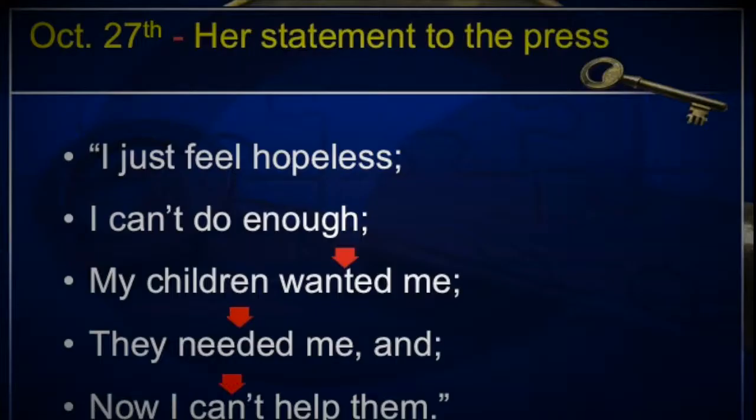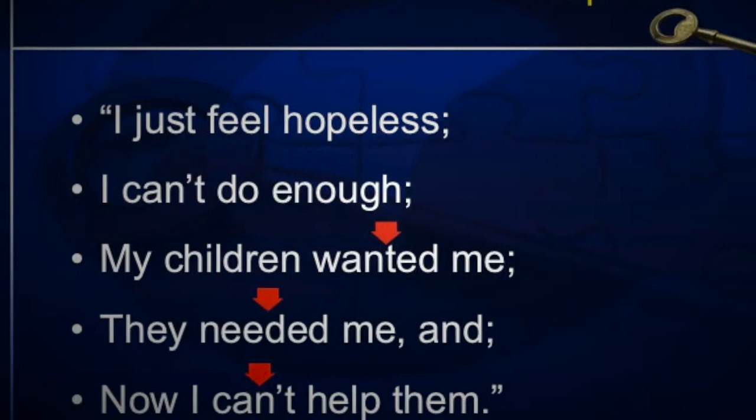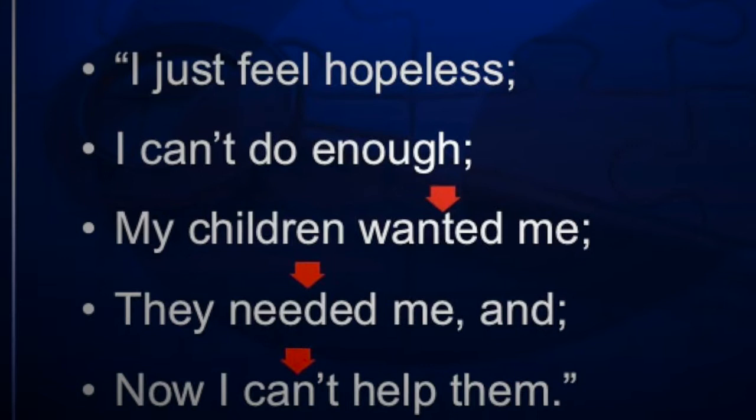Do you remember Susan Smith — South Carolina, 1994? Susan was eventually convicted of killing her two little boys. Her communication with the press is valuable to apply statement analysis and the indicators of deception. In three of these five statements, she uses past tense terms to refer to her little boys, indicating she already knows what's happened to them — that they are deceased. Using past tense is not a normal way to communicate in a missing person case if you believe they are still alive.